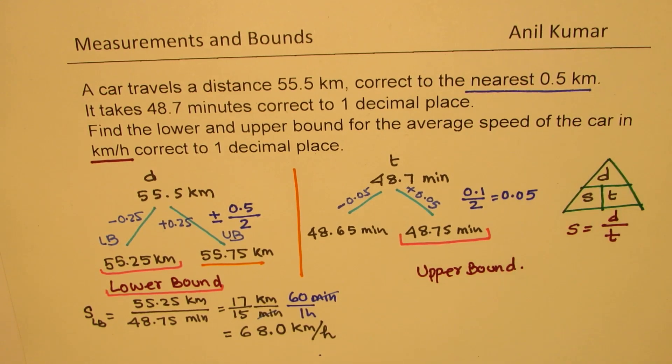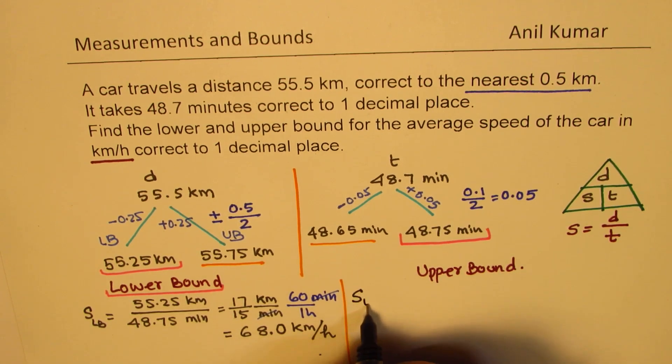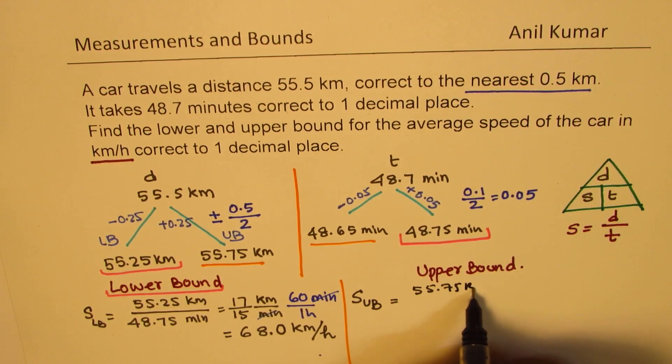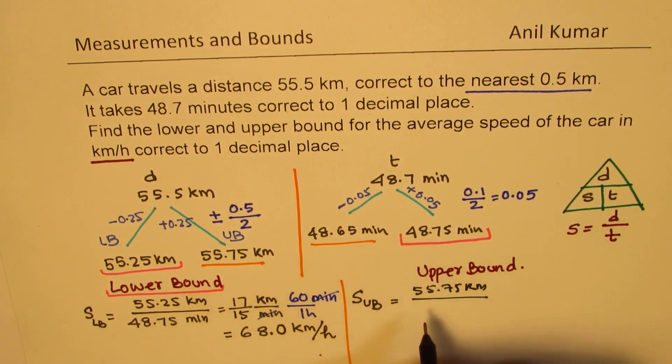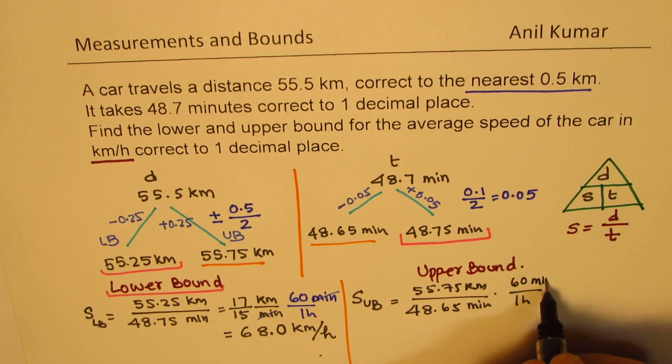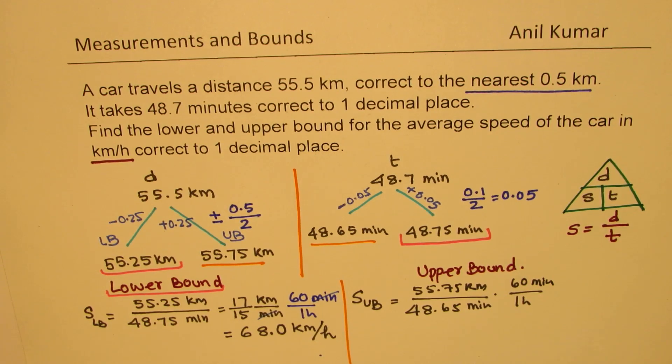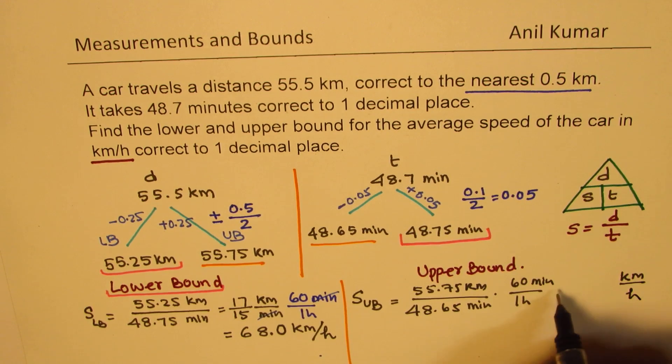You can pause the video and find out what is the upper bound. For the upper bound, we have to use higher value of distance and lower value of time. Speed upper bound will be the higher value, 55.75 kilometers, divided by the lower value of time, which is 48.65 minutes. We should convert this to hours. One hour is 60 minutes. When we find the answer, we'll get the answer in kilometers per hour, since this minute and minute will cancel.